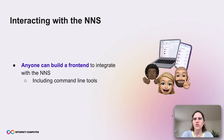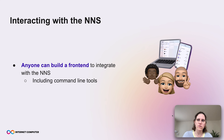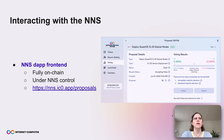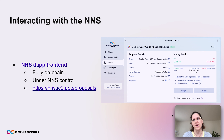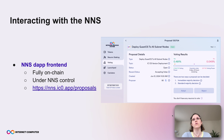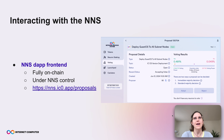How can you now interact with the Network Nervous System? Anyone can actually build a frontend to integrate with the NNS — this includes command line tools, but it's also possible to integrate this into other DAPs, and that has already happened. Let me mention two tools that might be useful. The first one is the NNS DAP frontend — this is one of the most popular frontends to interact with the NNS. It is fully on chain and also under the control of the NNS, so it is decentralized. You can see an example of the view you see when voting on a proposal, and there are other things in the menu for staking tokens and your wallet.